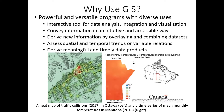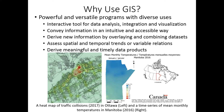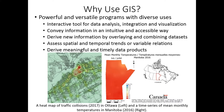GIS can also be used to derive new information through overlaying and combining multiple datasets and variables, and take advantage of finer resolution and frequency datasets. The figure shows two visualizations created in GIS: on the right is a heat map of traffic collision frequency in Ottawa for 2017, and on the left shows a time series of mean monthly temperatures across Manitoba in 2016. Both demonstrate the power of visualizing spatial data to convey information, and were produced using a few simple steps.